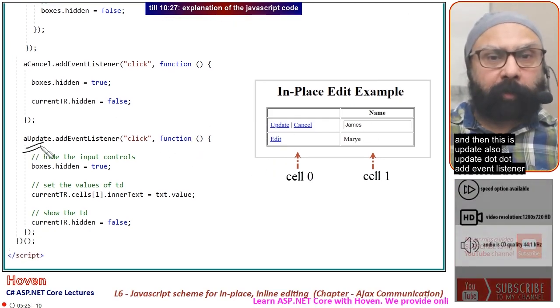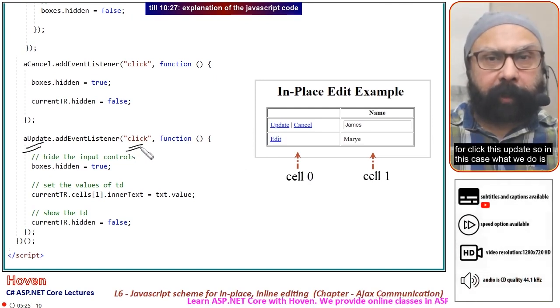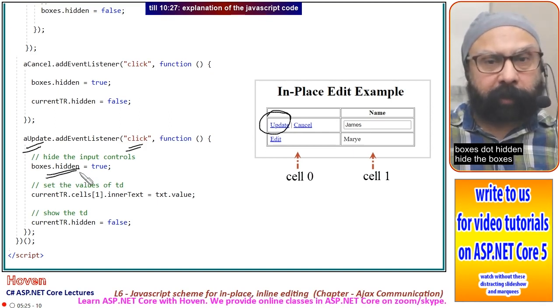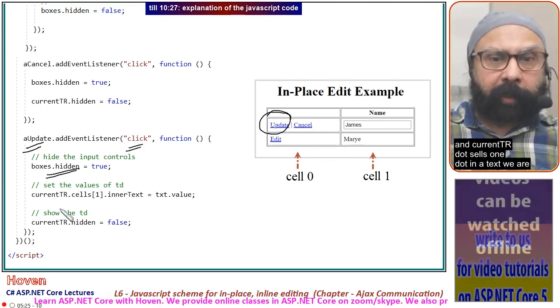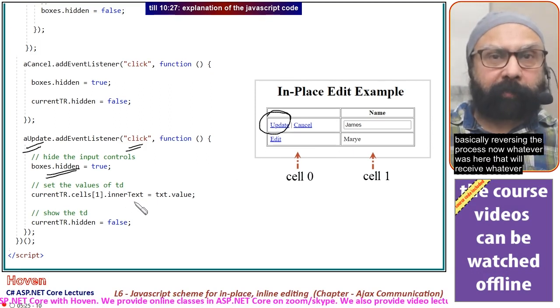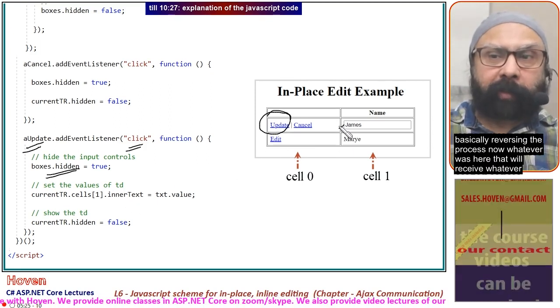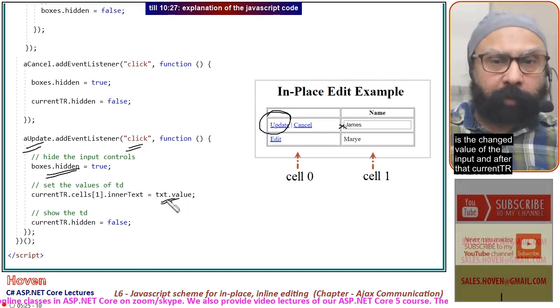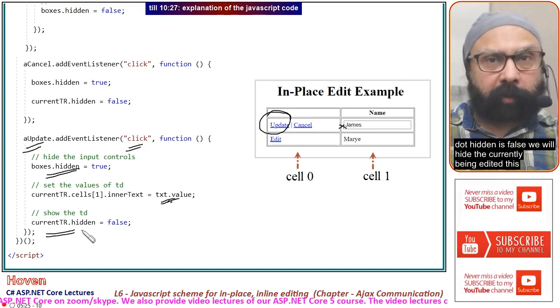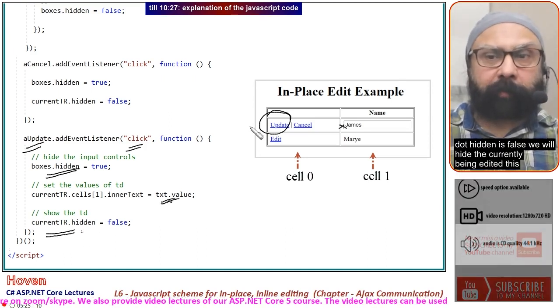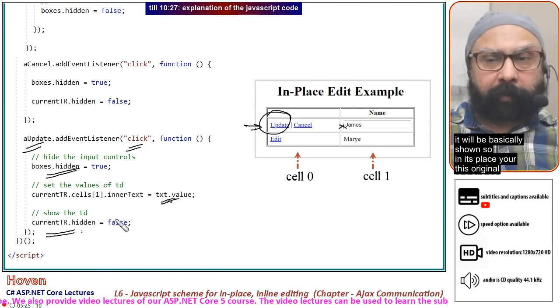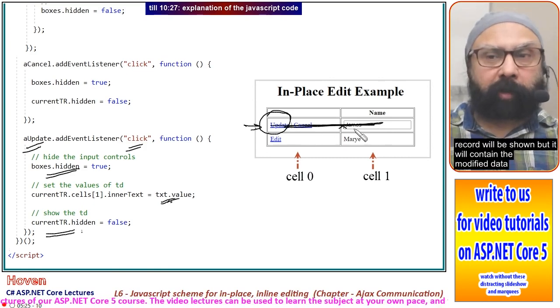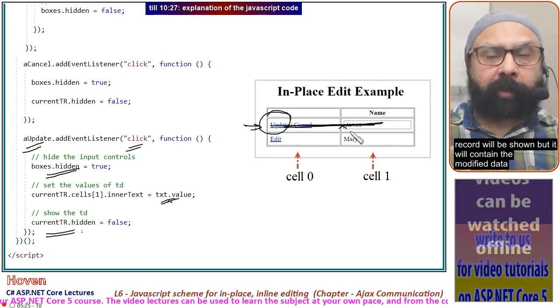Then there's update. We add an event listener for click on this update. In this case, boxes.hidden hides the boxes, and currentTr.cells[1].innerText—we're reversing the process. Whatever was here receives the changed value from the input. After that, currentTr.hidden = false, so the original record will be shown but it will contain the modified data.